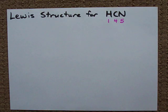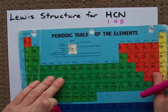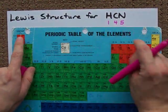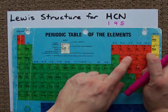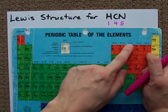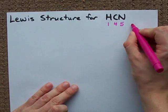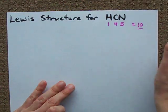I know that because I know the periodic table. Hydrogen is in the first column, it brings one. Carbon is in column four, it brings four. Nitrogen is in the fifth column, it brings five. So, that means I need ten electrons total.